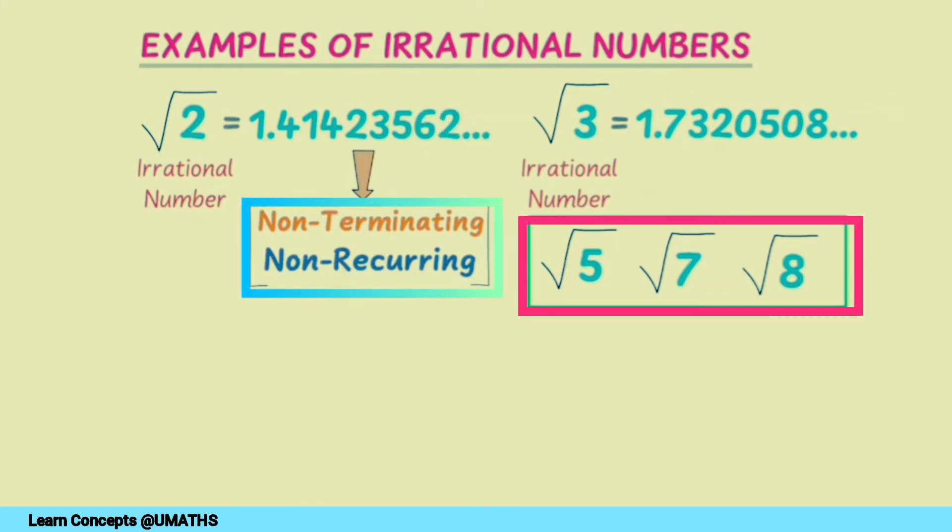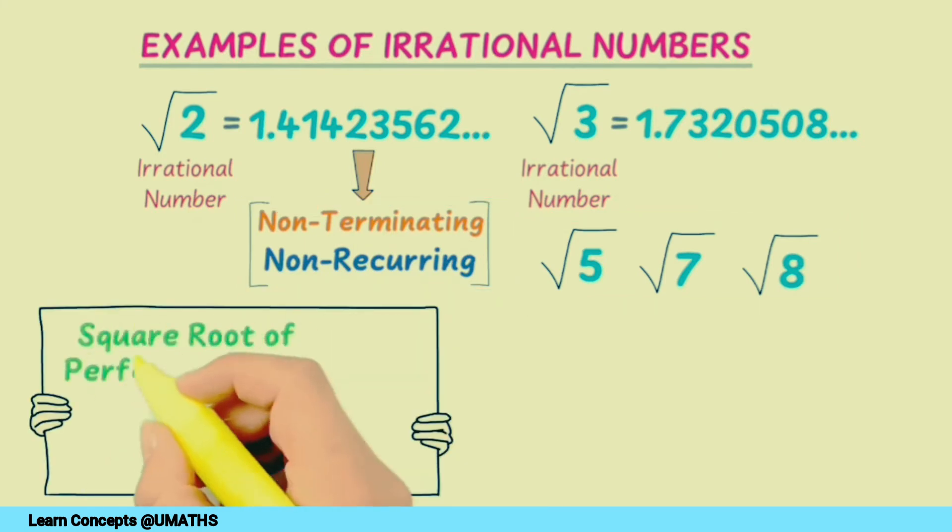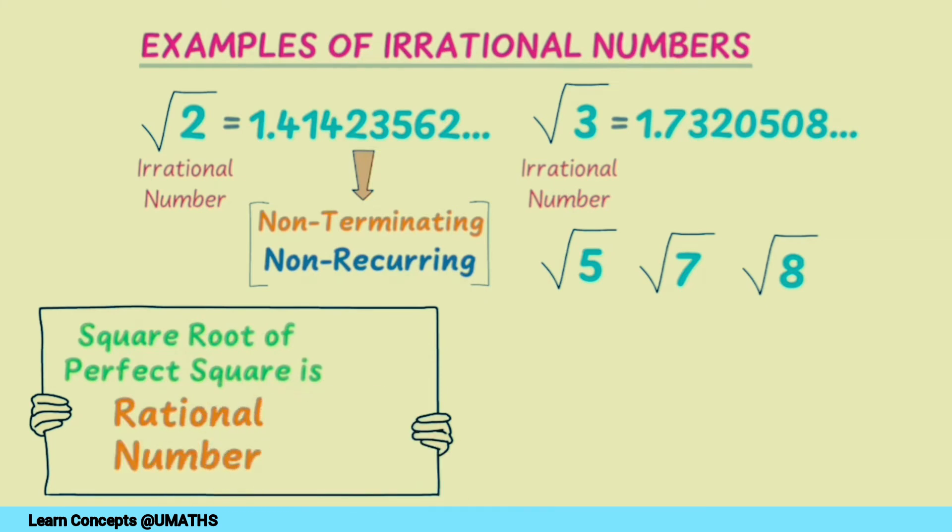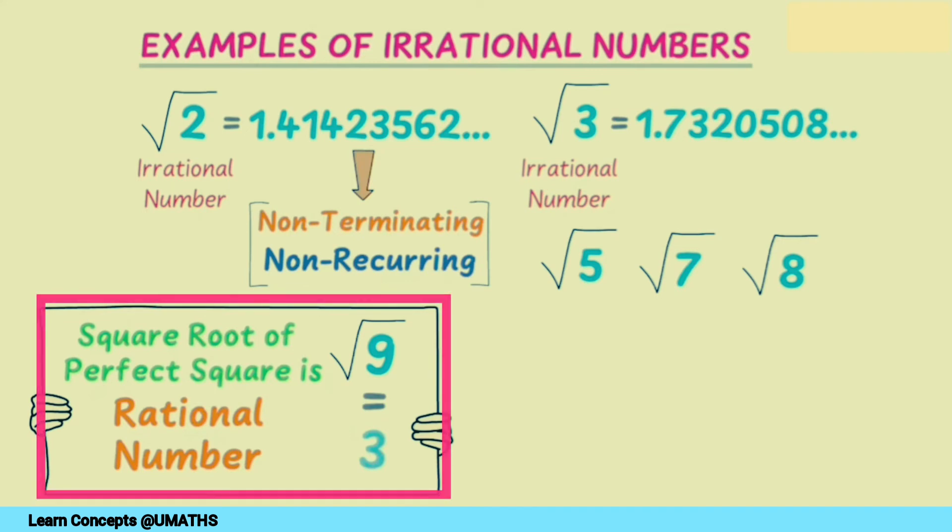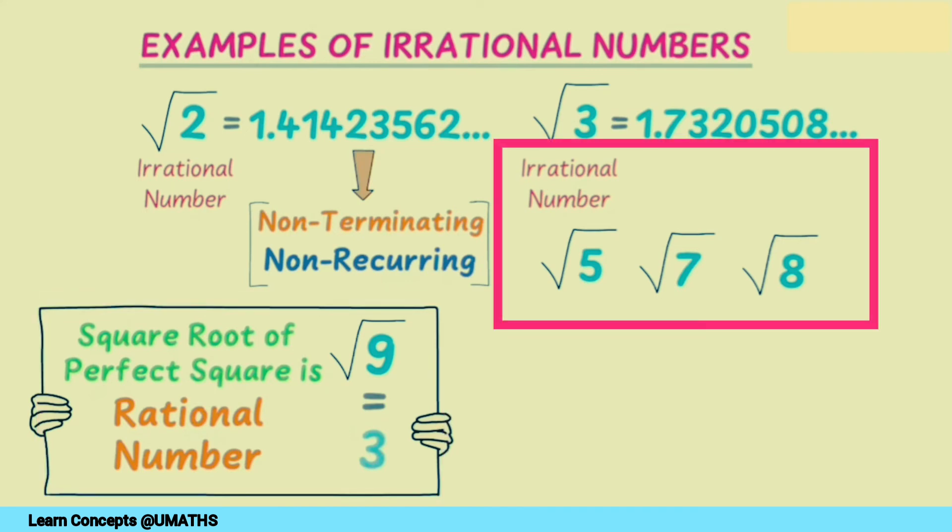But the root of any perfect square will be a rational number. For example, √9. We know that √9 is equal to 3. 3 is a positive integer, so √9 is a rational number. The root of any perfect square will be a rational number, but the root of any number which is not a perfect square will always result in irrational numbers.